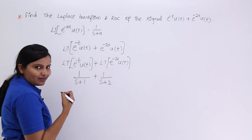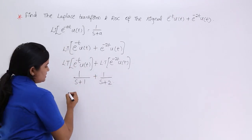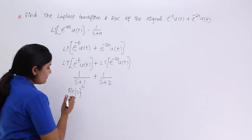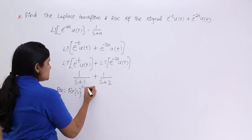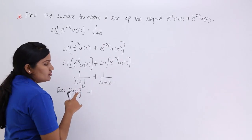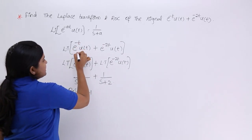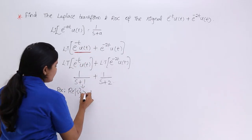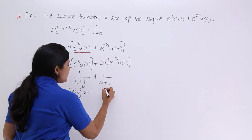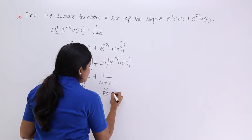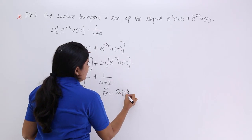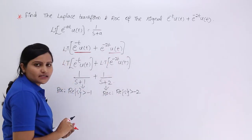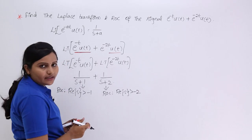Now it is time to write the region of convergence. For the first part of the function, the ROC is real of s greater than minus 1. The signal has u of t, meaning it is right-sided, so we write greater than. Similarly, for the second part, the ROC is real of s greater than minus 2, because that signal also has u of t and is also right-sided.